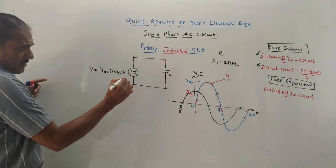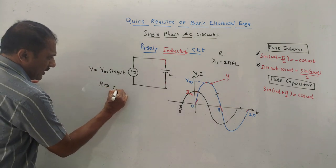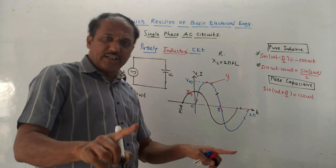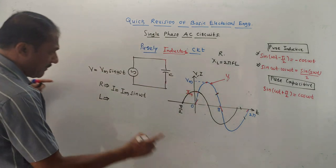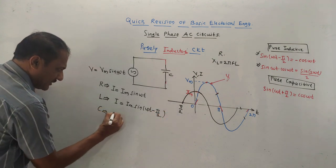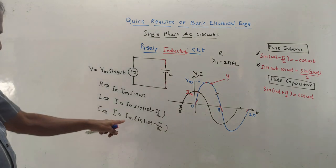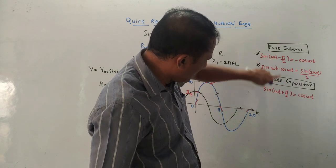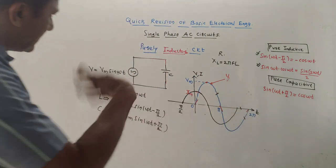If you want to write the equation of current: for a resistive circuit, I = Im sin(ωt) — same as voltage, only notation is changed, because voltage and current are in the same phase. For a purely inductive circuit, the equation becomes I = Im sin(ωt − π/2), since current lags voltage by π/2. For a capacitive circuit, the equation is I = Im sin(ωt + π/2), because current leads by π/2. The formula sin(ωt − π/2) gives −cos(ωt), and sin(ωt + π/2) gives +cos(ωt).